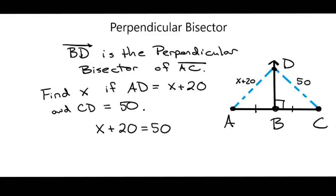To solve for this, I would subtract 20. Those cancel. I bring down my equal sign, I bring down the x. 50 minus 20 is 30. So x equals 30.